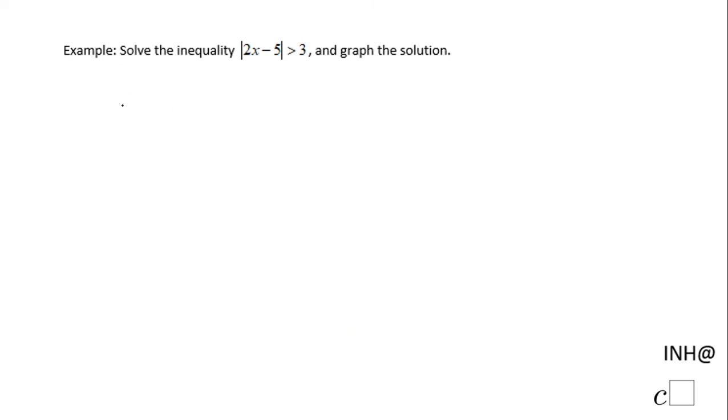Welcome or welcome back at any help at c-square. In this example we have an absolute value inequality which says absolute value of 2x minus 5 greater than 3. So this is very important to see this greater.